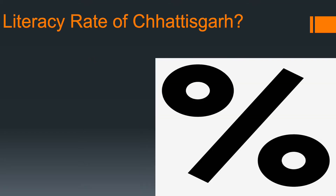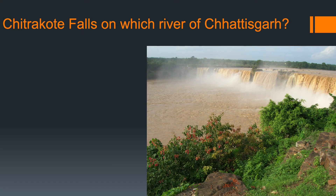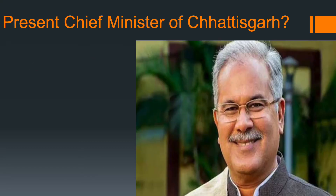Next: what is the literacy rate of Chhattisgarh? Answer: 77.3%. Next: on which river is the Chhattisgarh Falls located? Answer: Indravati River. Next: who is the present Chief Minister of Chhattisgarh? Answer: Bhupesh Baghel from INC Party.